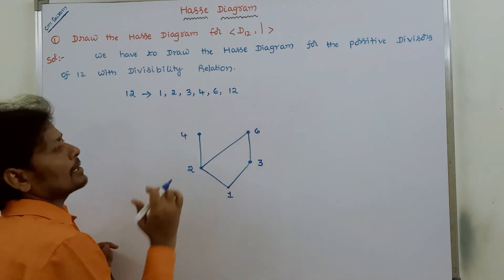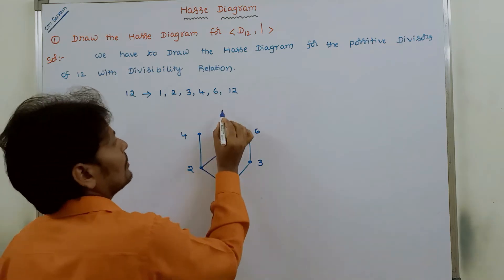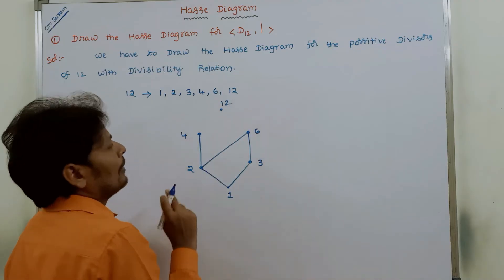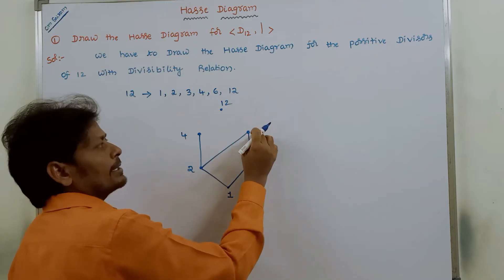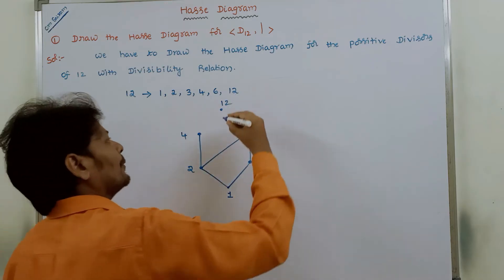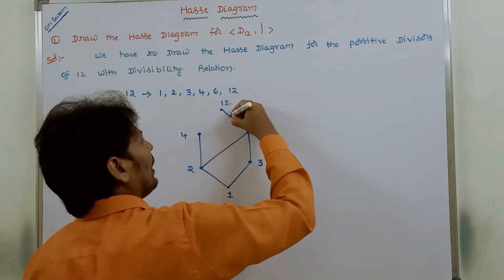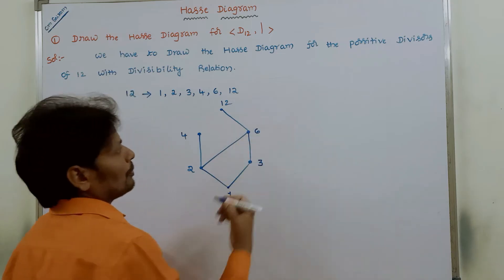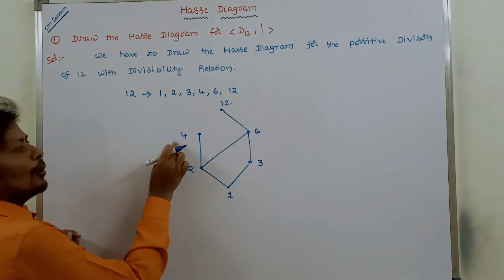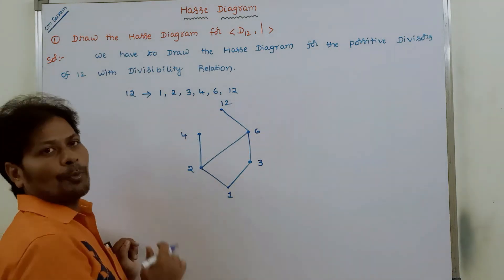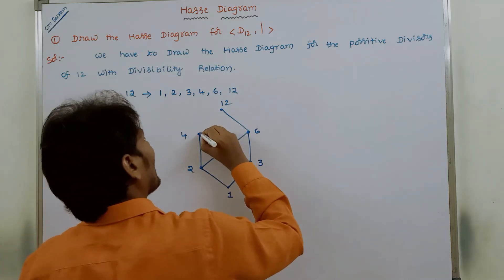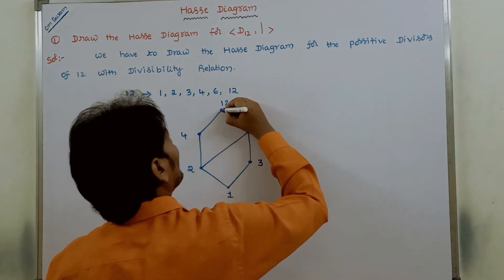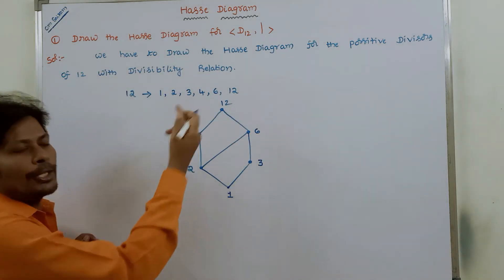The next divisor is 12. Since 6 divides 12, we have to draw the edge between 6 and 12. Also, 4 divides 12, so we have to draw the edge between 4 and 12.